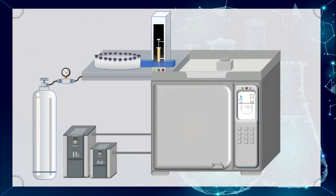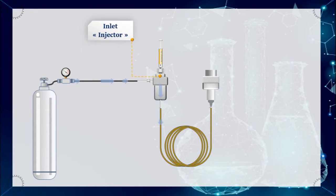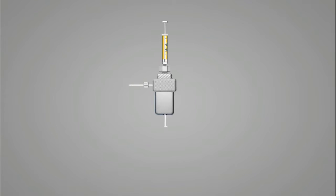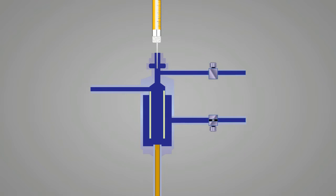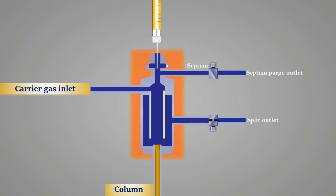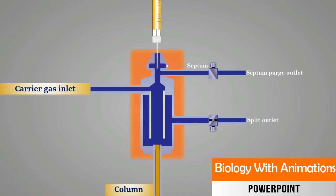The column inlet, or injector, is attached to the column head and provides the means to introduce a sample into a continuous flow of carrier gas. In the injector, a sample is introduced into a heated chamber via a syringe through a septum. The heat facilitates volatilization of the sample and sample matrix.